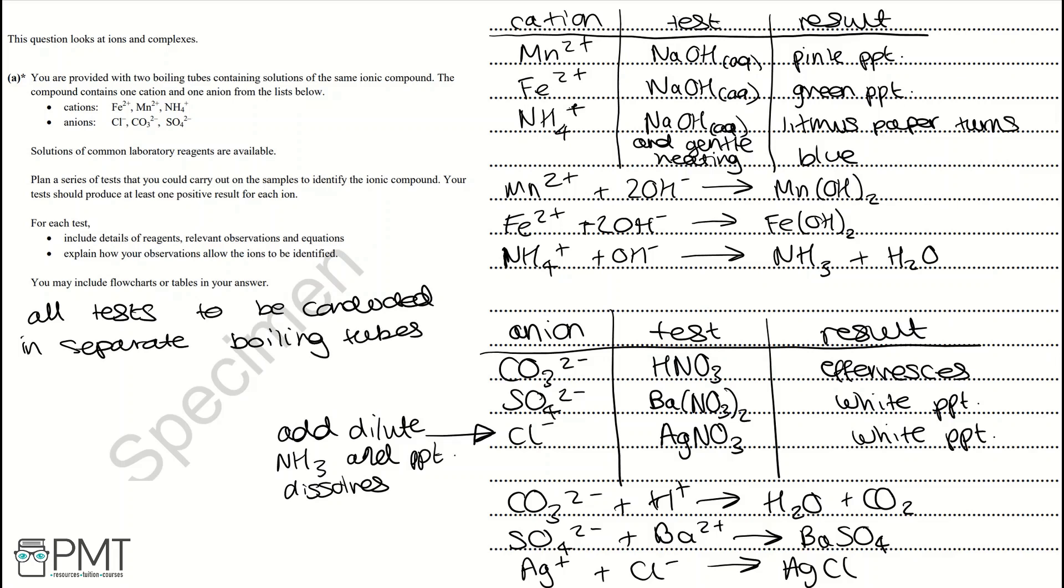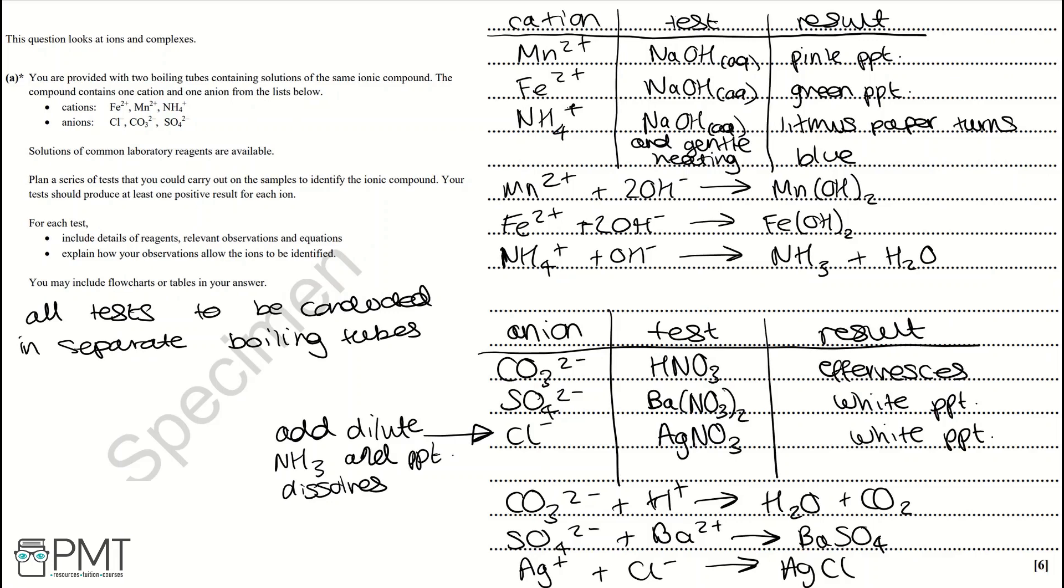To get the six marks for this question, we must develop a plan that allows identification of all six ions and includes essential detail and equations for all test procedures and observations, with three anion tests in correct sequence or in separate boiling tubes as we've stated here. We must also include a cation test with essential detail and all equations, which we have done in this model solution.